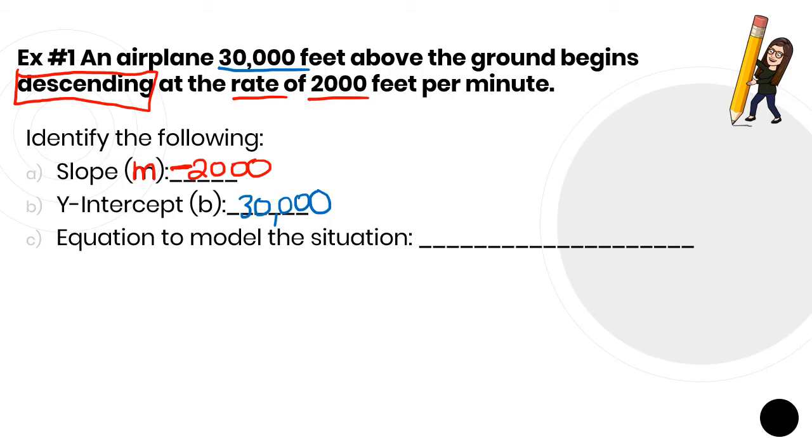So now to write my equation, our goal is y equals mx plus b. This is what we've been doing in this unit. We always write y, we always write x. The slope is always before the x. So negative 2,000. The b is always added or subtracted onto the end. Well, it's a positive 30,000 feet. So we add it on.